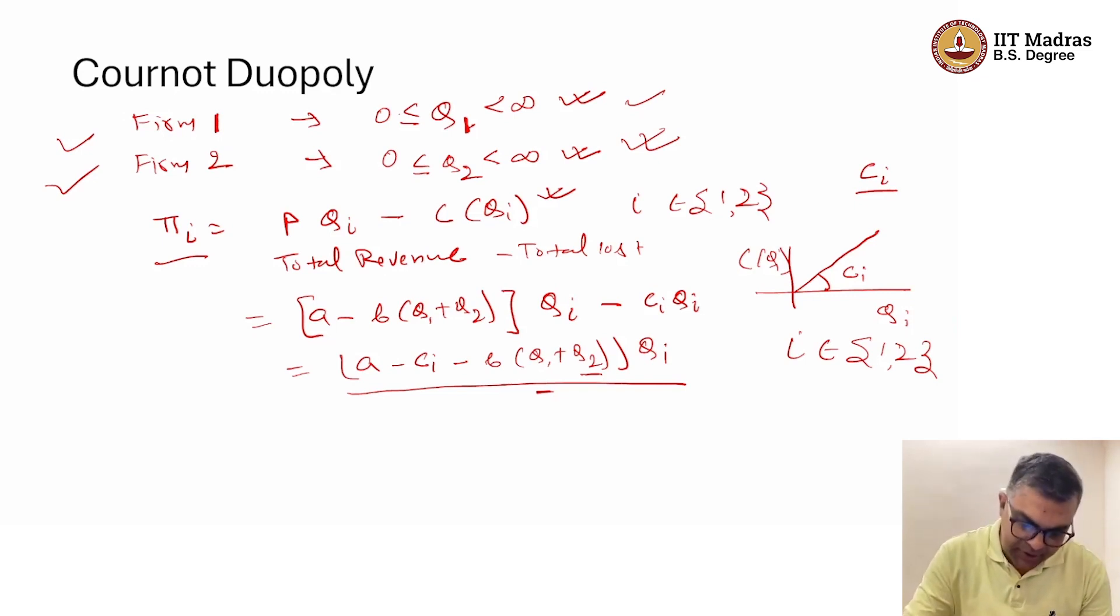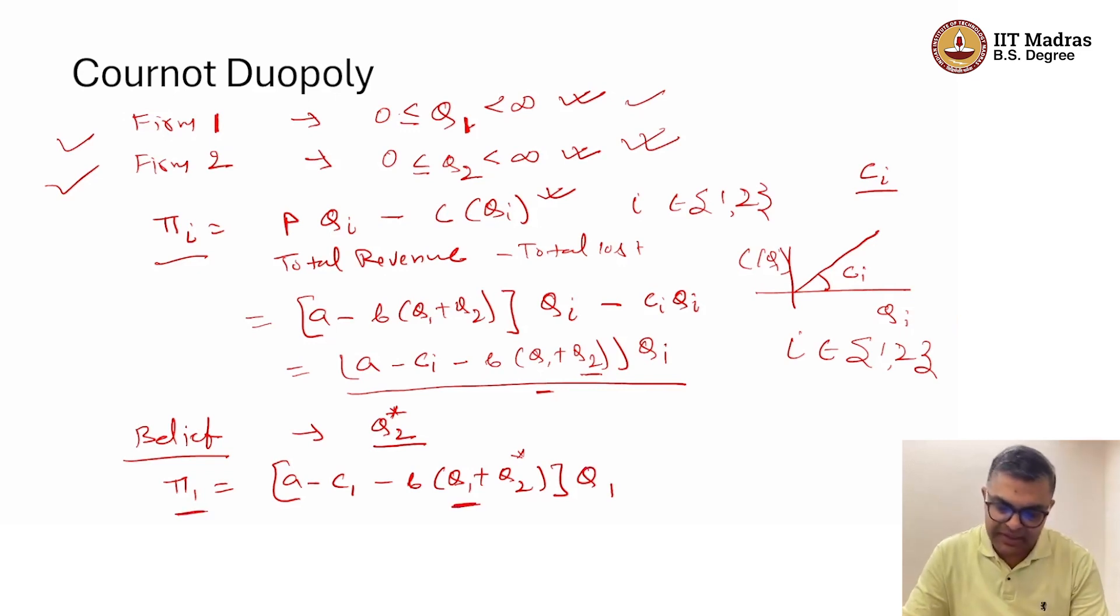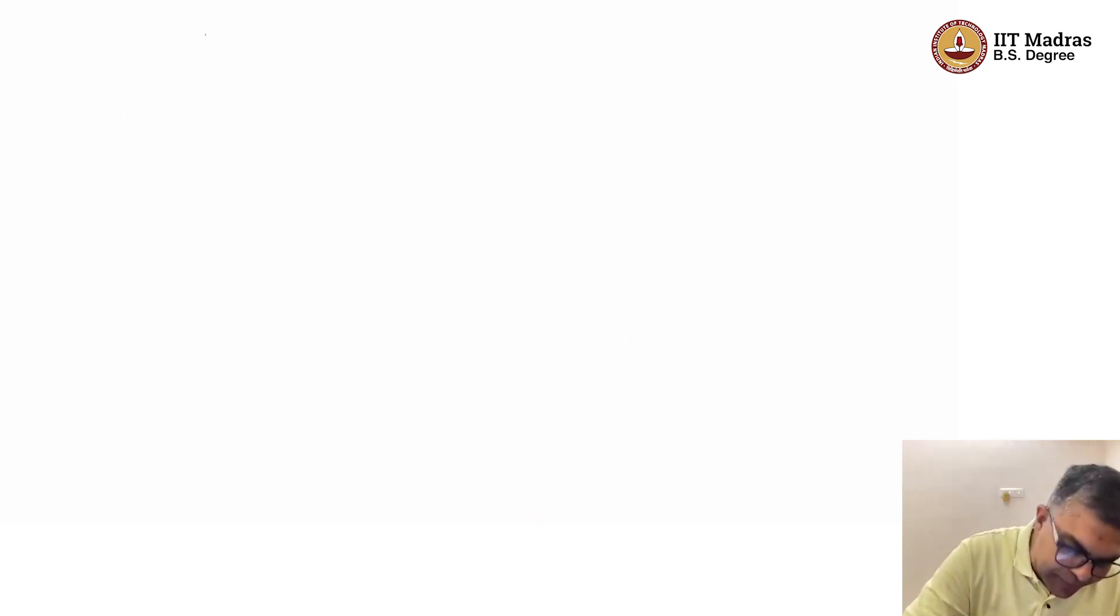Very clearly, what can firm 1 do? Firm 1 can form a belief—deliberately I am introducing the term belief—that firm 2 is producing Q2 amount. Given the firm 2 is producing Q2 star amount, that is the belief, firm 1's problem is going to be A minus C1 minus B times Q1 plus Q2 star multiplied by Q1. Firm 1 has to choose Q1 in such a way that the profit gets maximized. But of course, this Q1 will depend on Q2.